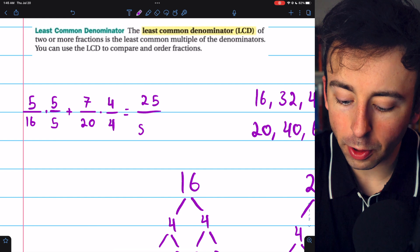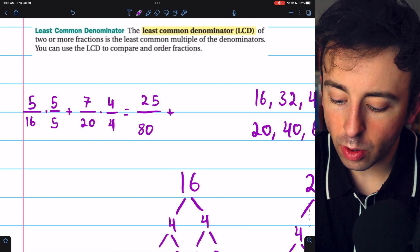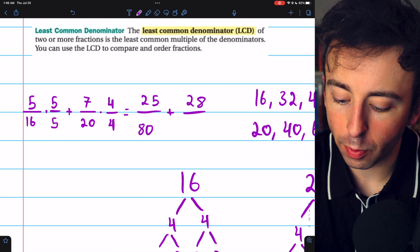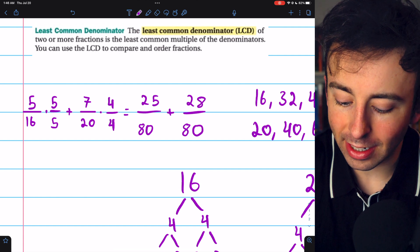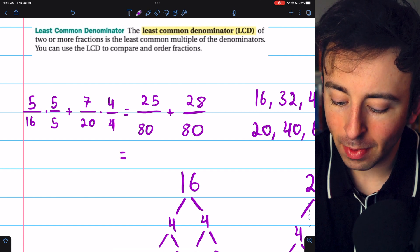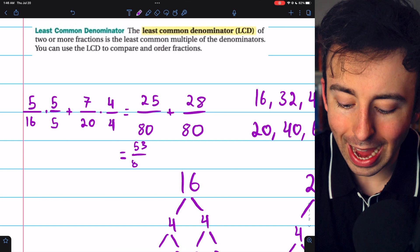Then on the left, we have 25 over 80, and on the right, we have 28 over 80. And now it's very easy to add these fractions together. It's going to be 53 over 80.